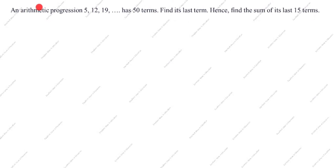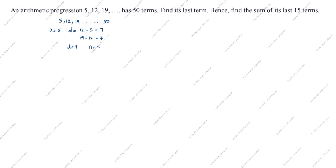What is given? Arithmetic progression: 5, 12, 19 up to 50 terms. What is a? a is equal to 5. What is d? d is equal to 12 minus 5, which is equal to 7, or 19 minus 12 is equal to 7. So d is equal to 7. What is n? n is equal to 50. We need to find the last term.